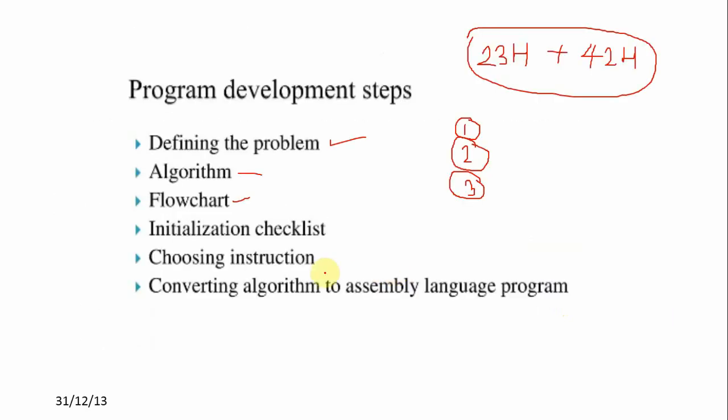This procedure is called the initialization checklist. Initialization checklist means: in a program, there are many variables, constants, and various parts of the system such as segment registers, flags, and programmable ports that are used in programming.